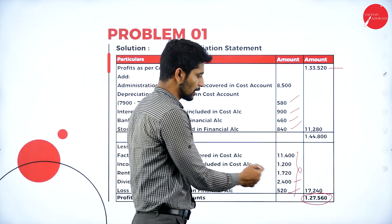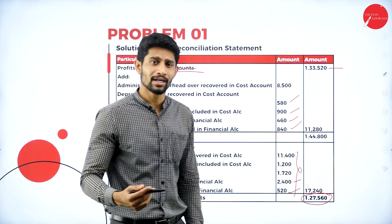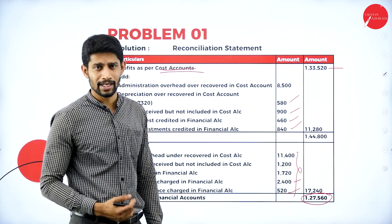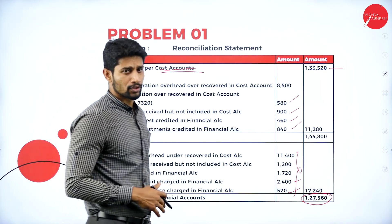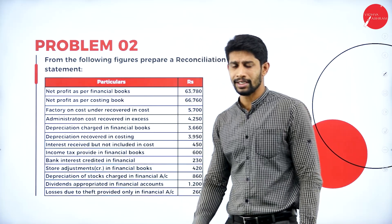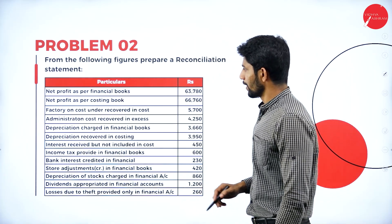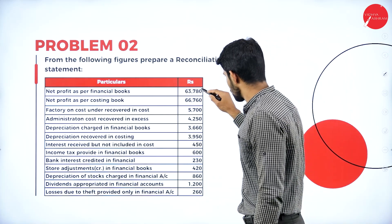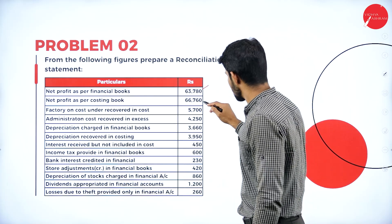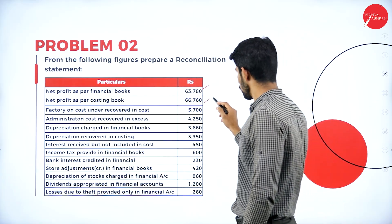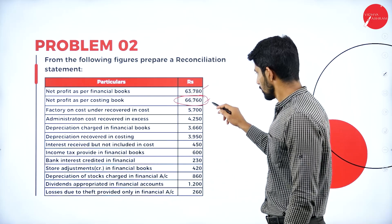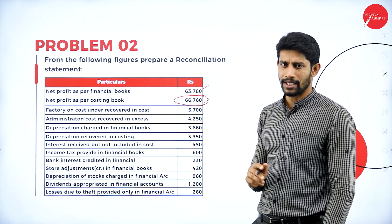Because of these adjustments — these additions and subtractions — you can see the difference in profit between cost accounts and financial accounts. By doing this adjustment you get the exact picture of why the difference is showing. This is how you solve reconciliation problems. Now let us move to Question 2: From the following figures prepare a reconciliation statement. Net profit as per financial books is Rs. 63,780 and net profit as per costing books is Rs. 66,760. We are taking cost profit as the base.